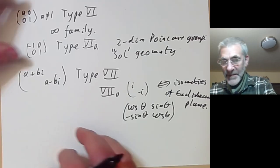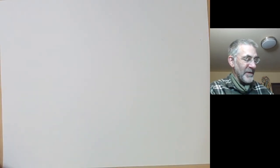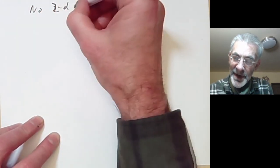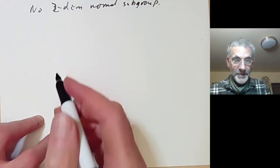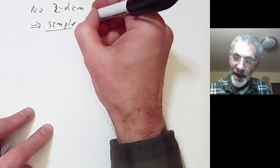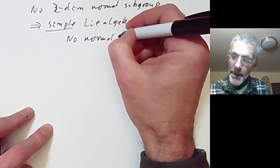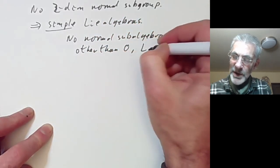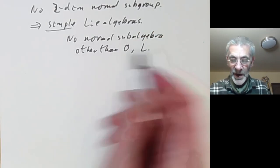That gives a quick summary of the three-dimensional groups with a normal subgroup of dimension two. Now we get to the groups which have no two-dimensional normal subgroup. These groups turn out to be simple Lie algebras — meaning there's no normal subalgebra other than 0 and the whole Lie algebra. This is the analogue of simple groups, which are groups with no normal subgroup other than the obvious ones.